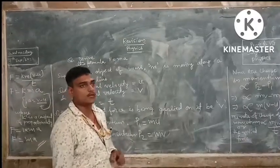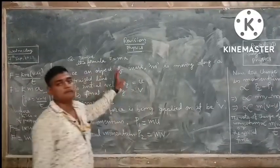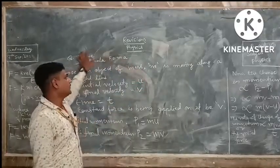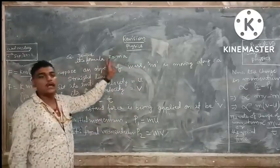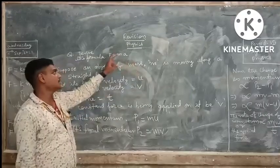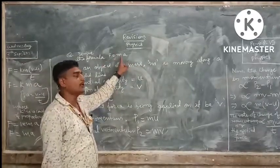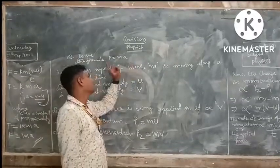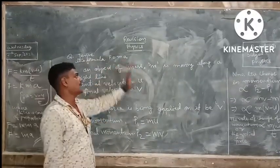Force is nothing but the product of mass and acceleration. So here what we will do is derive the formula F equals to ma — that is, F for force, m for mass of the body, a for the acceleration acquired by the body. Force equals to mass into acceleration.